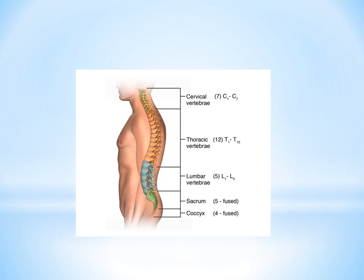The cervical vertebrae are seven in number, named C1 to C7. So if you have a question where there is a fracture of C1, it means fracture of the first cervical vertebrae, C2 is the second, C3 is the third, and so on. The thoracic vertebrae are 12 in number, T1 to T12. The lumbar vertebrae are 5 in number, L1 to L5.